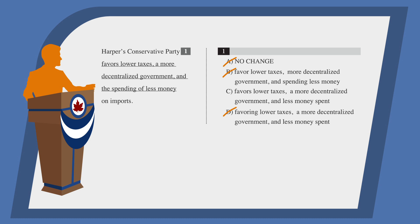Cross it out. This only leaves us with answer choice C: favors lower taxes, a more decentralized government, and less money spent. This corrects the parallel structure issue for the third item and leaves the verb "favors" in its correct form. So C is our answer.